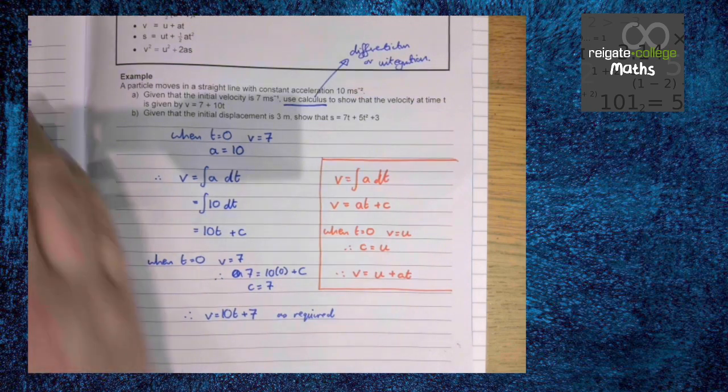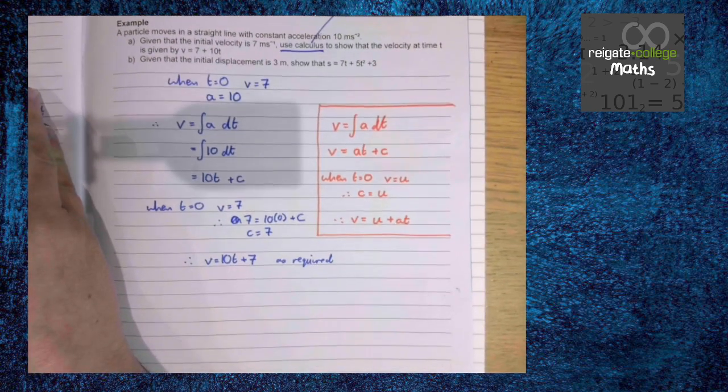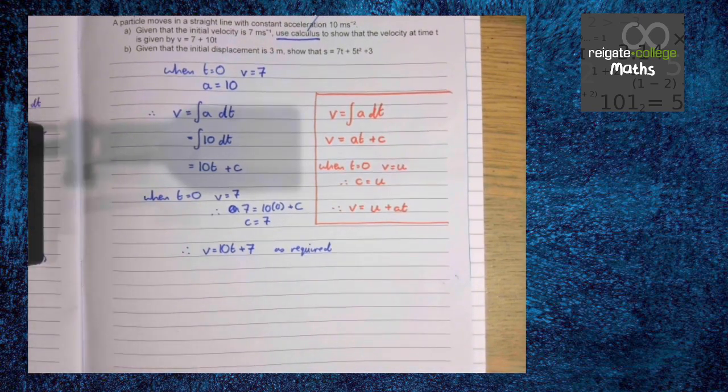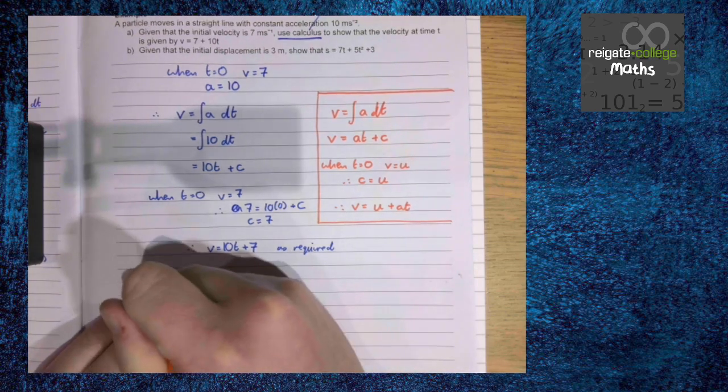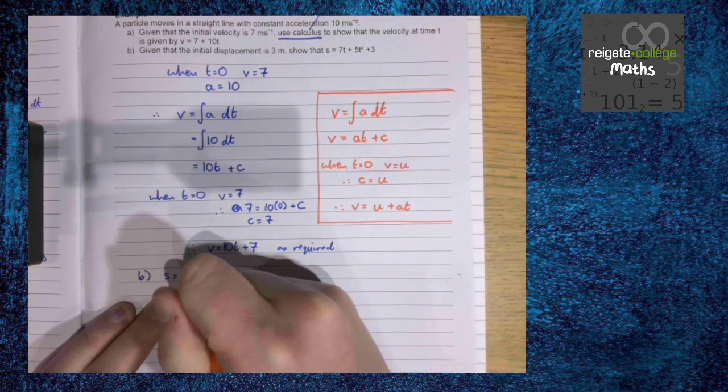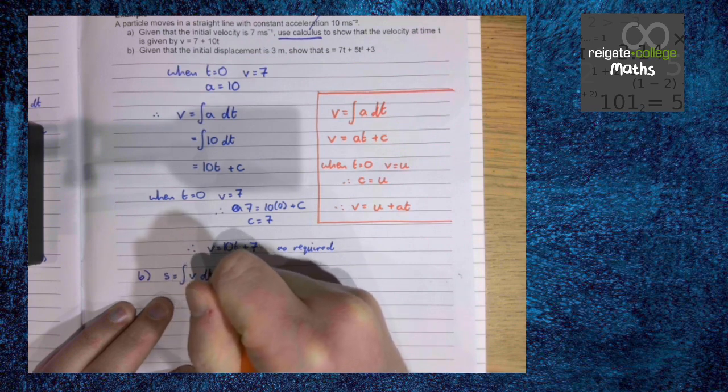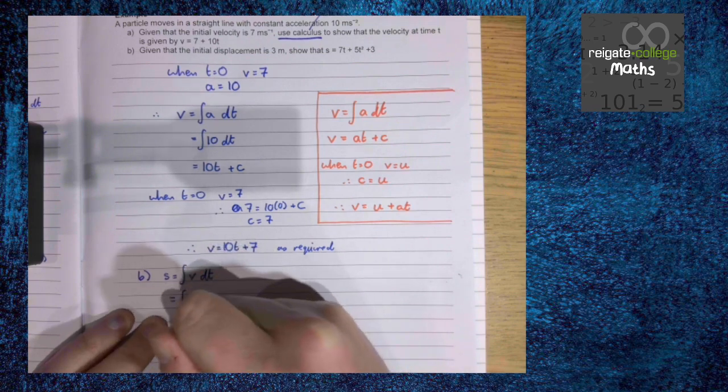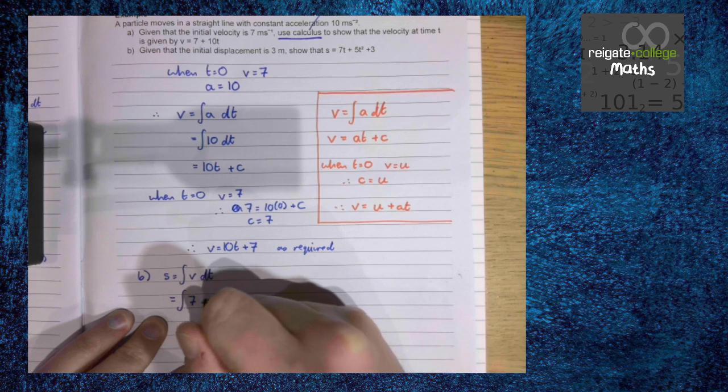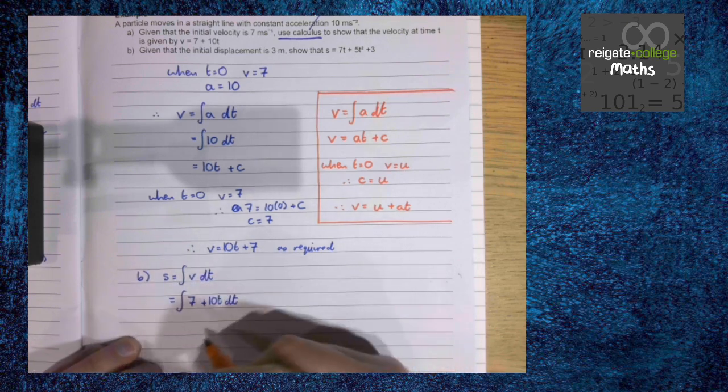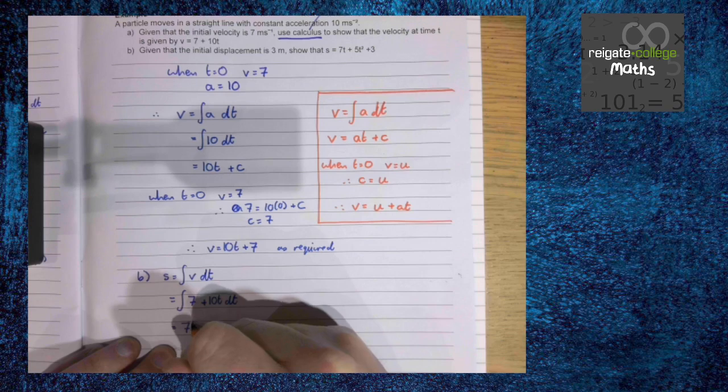Now looking at part b, given that the initial displacement is 3, show that s equals 7t plus 5t squared plus 3. Again, we know that s is the integral of v. So we know s is going to be the integral of 7 plus 10t, which is 7t plus 5t squared plus c.